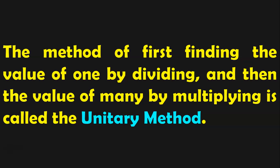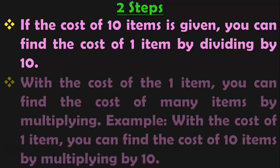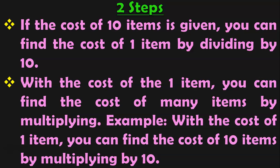The method of first finding the value of 1 by dividing and then the value of many by multiplying is called the Unitary Method. There are two steps involved in this process. First, if the cost of 10 items is given, you can find the cost of 1 item by dividing by 10. After that, once you find the cost of 1 item, you can find the cost of many items by multiplying — for example, you can find the cost of 10 items by multiplying by 10.